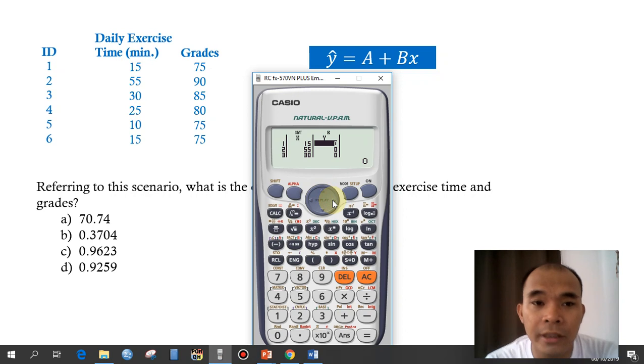And then for respondent 1, the grade is 75, next is 90, then 85, 80, 75, and then 75.